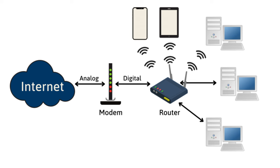How does a modem work? The modem connects to the ISP via coaxial cable using an F-type connector, commonly seen with cable TV. From the modem, an Ethernet cable using RJ45 connectors connects to a router. The router creates a local network and distributes the Ethernet connection to your devices, either wirelessly or through additional Ethernet connections.